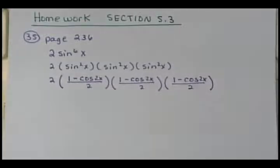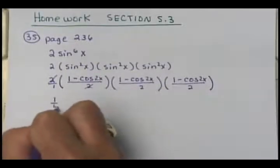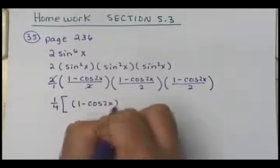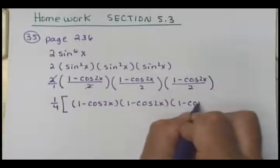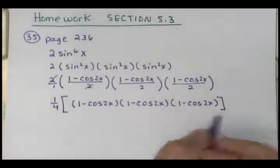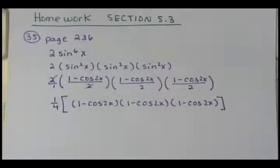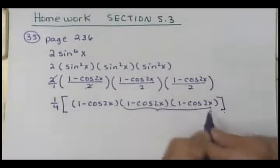So what you can do at this point is cancel out one of those 2's, and I'm left with 1 fourth times (1 minus cosine 2x) times (1 minus cosine 2x) times (1 minus cosine 2x). Now at this point it doesn't matter which two you fold — they're all three the same — so I want to pick two of these to fold, and I'm going to fold these two.